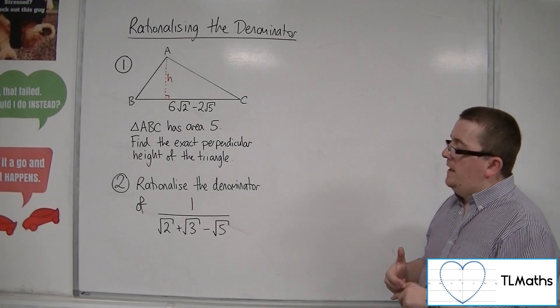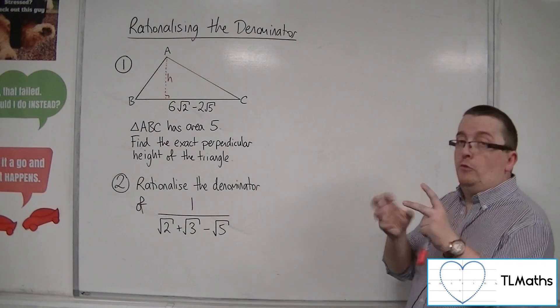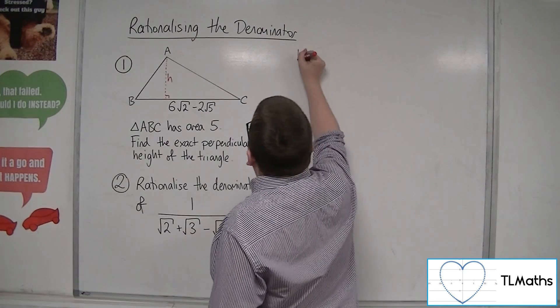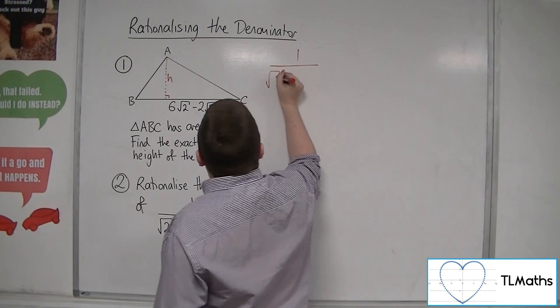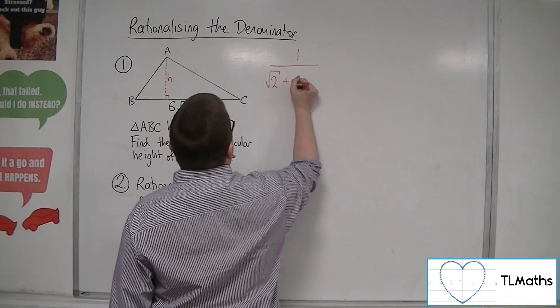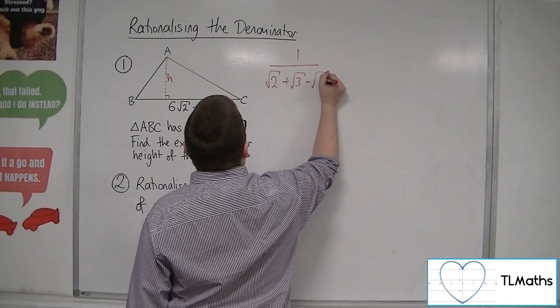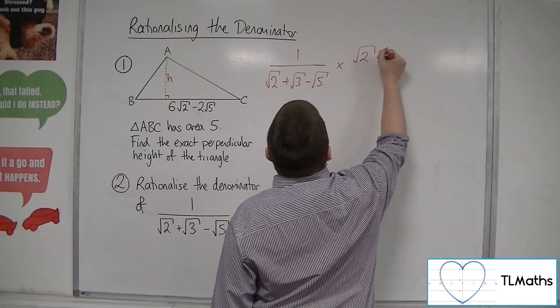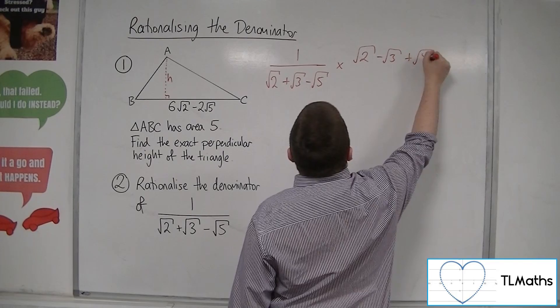So, to change the signs, there's both signs in this case. So, if we try that, let's see what happens. So, we've got plus root 3 minus root 5. We're going to multiply top and bottom by root 2 minus root 3 plus root 5.